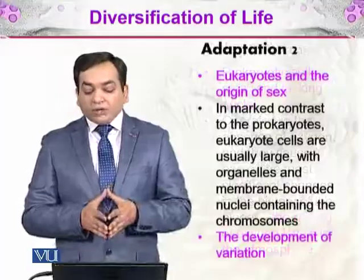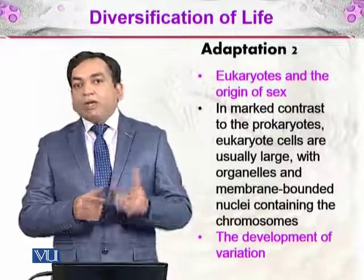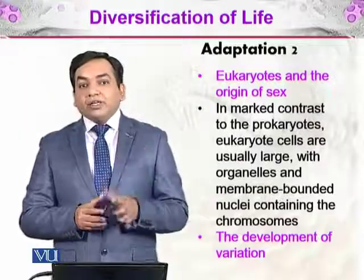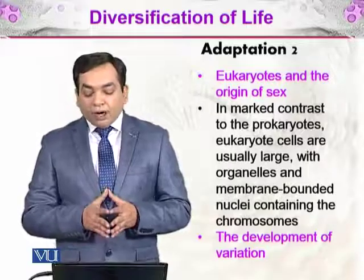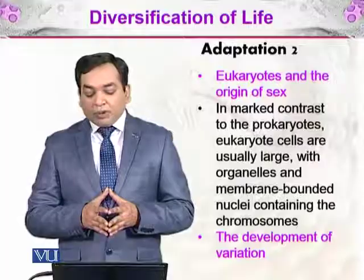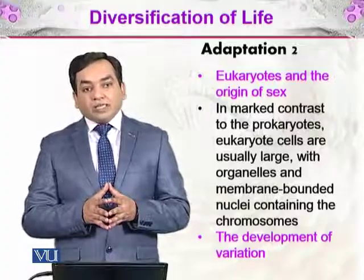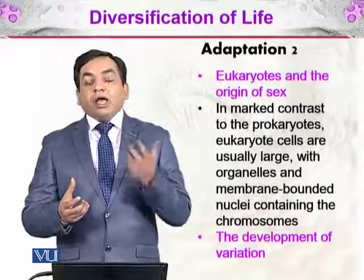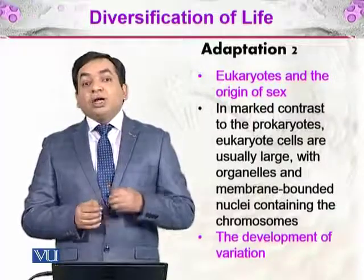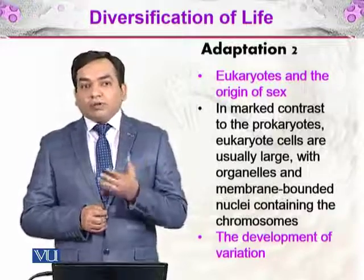The second adaptation was the eukaryotes and the origin of sex. After the origin of life in the form of bacteria or simpler molecules, the eukaryotes arrived — having a true nucleus. In marked contrast to the prokaryotes, eukaryotic cells are usually large, with organelles and membrane-bounded nuclei containing chromosomes. They also developed sex, meaning there were male and female. When they combined, there was variation, and development of variation resulted in the raw material for evolution.